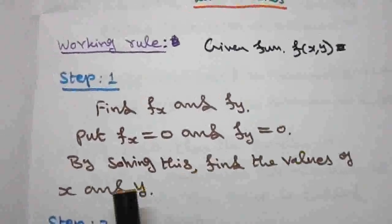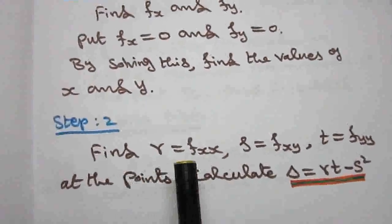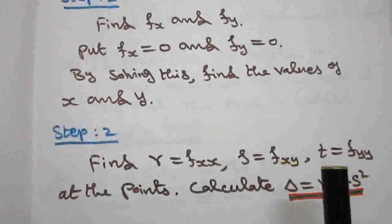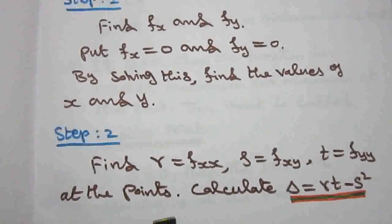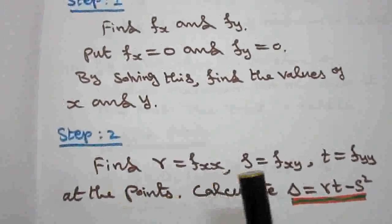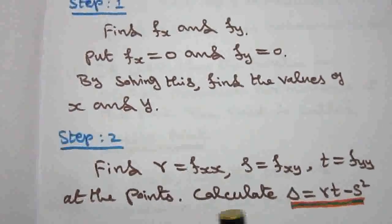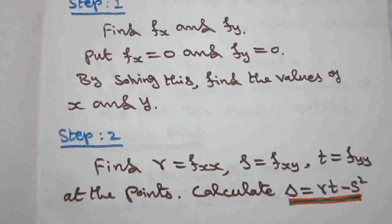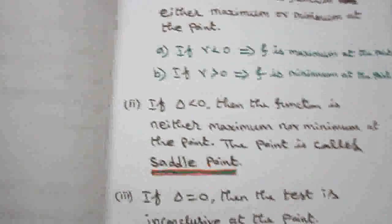Step two: find r = fxx, s = fxy, and t = fyy. Substitute the critical points into r, s, and t. Then calculate delta equal to r·t minus s².